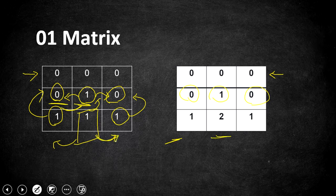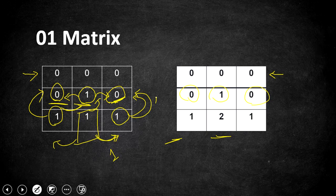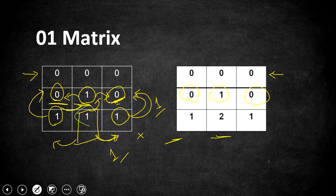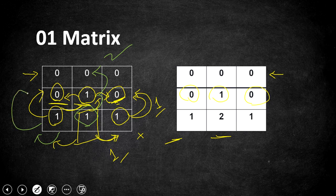So it is definitely going to be more than one for the distance. Going this way, the distance is one, and from there to one more adjacent cell the value is zero, so the distance is one plus one — two. Same way, through the upper direction it is distance two again. Going left and then one more step to reach zero it is also one plus one — two. In all directions the distance is two, so two is the minimum distance from this one to its nearest zero.